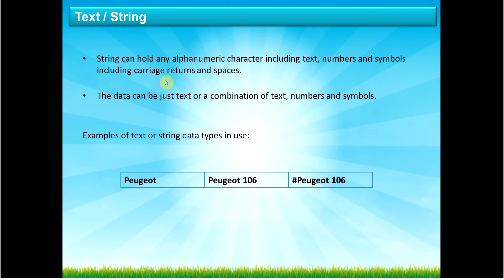I mentioned I'd come back to string because this is the biggest common misconception I see in the classroom. A string can hold alphanumeric characters — including text, numbers, symbols, and also a carriage return (new line) or a space, full stops, and commas. It holds them together in combination. For example, 'Peugeot' holds only alphabetical characters. 'Peugeot 106' has alphabetical and numerical characters — still a string. And this third example has a symbol, alphabetical characters, numerical characters, and a space — all together, still a string.